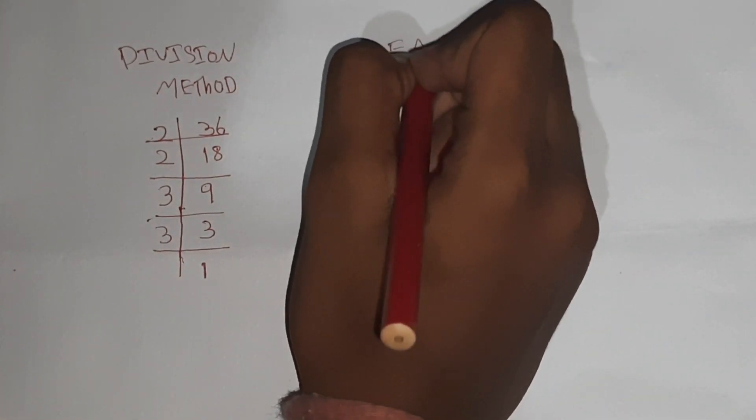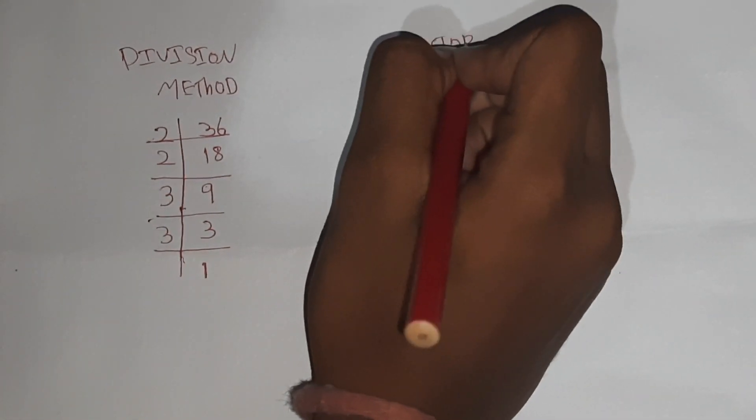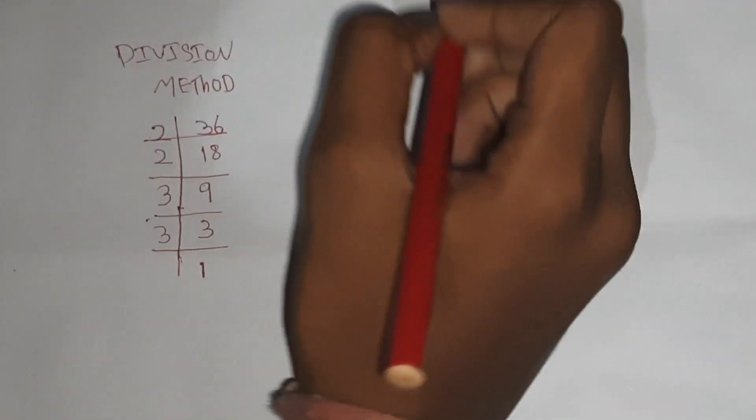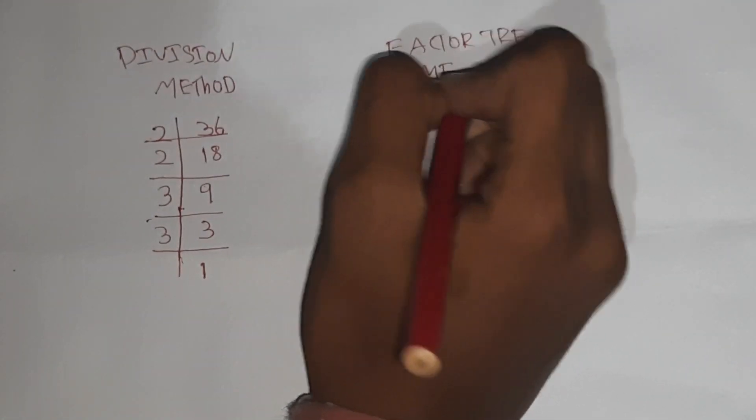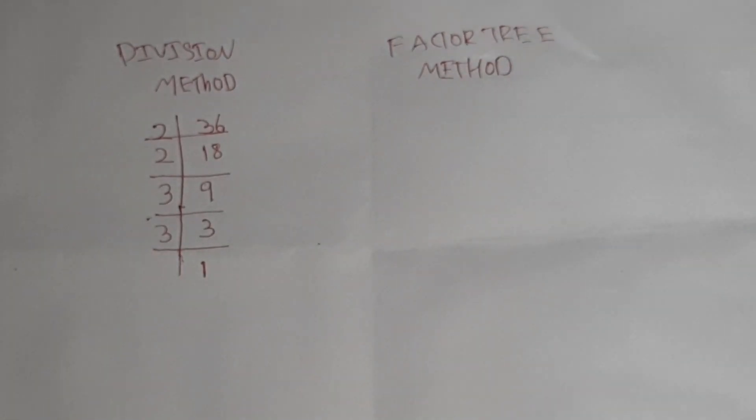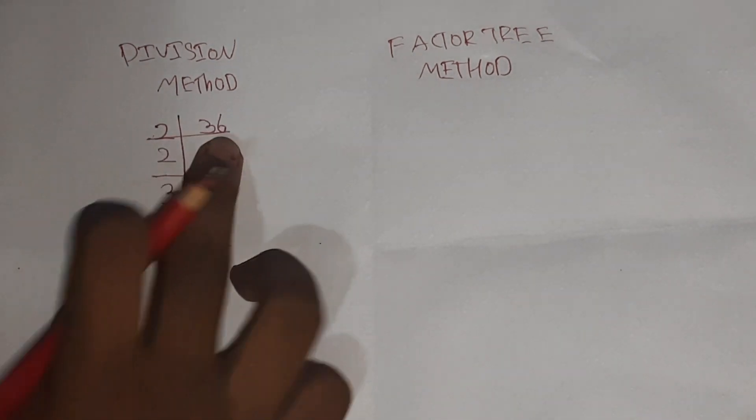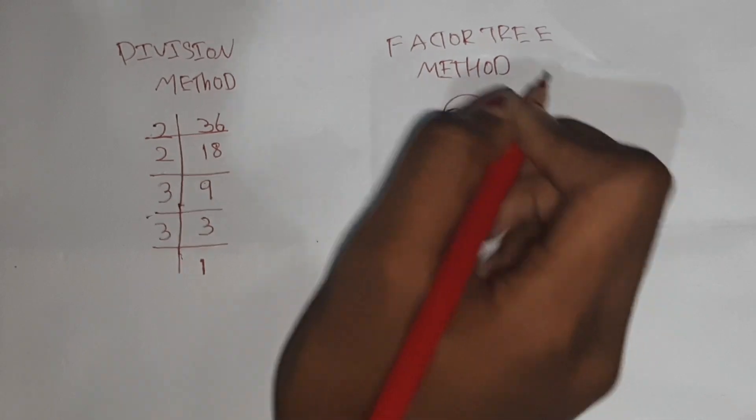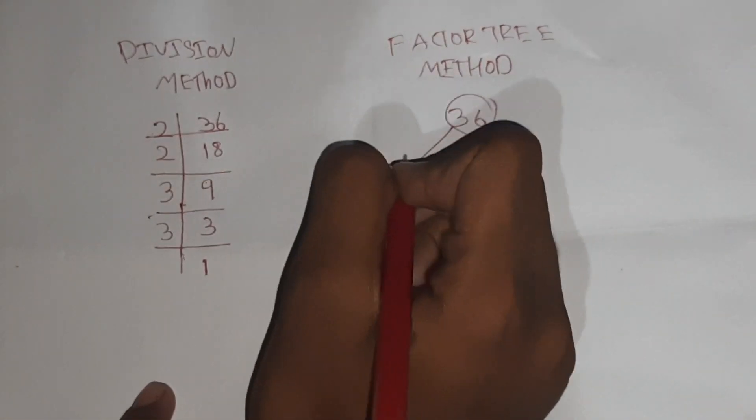So this is the division method. Now we will see the factor tree method. We are making this number 36. So 36 is what we are working with.